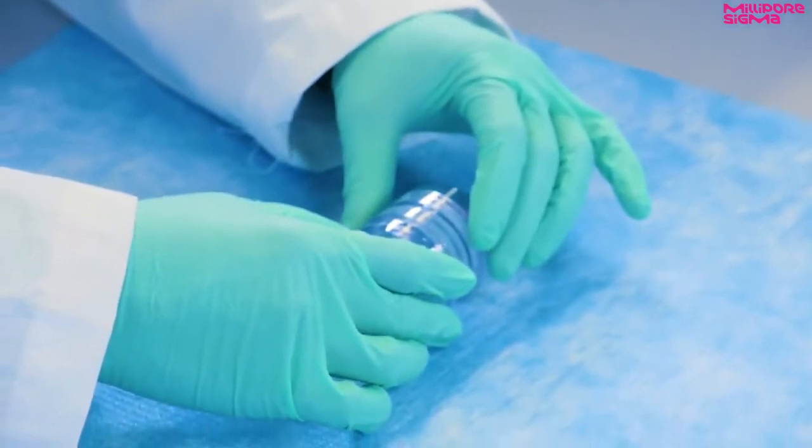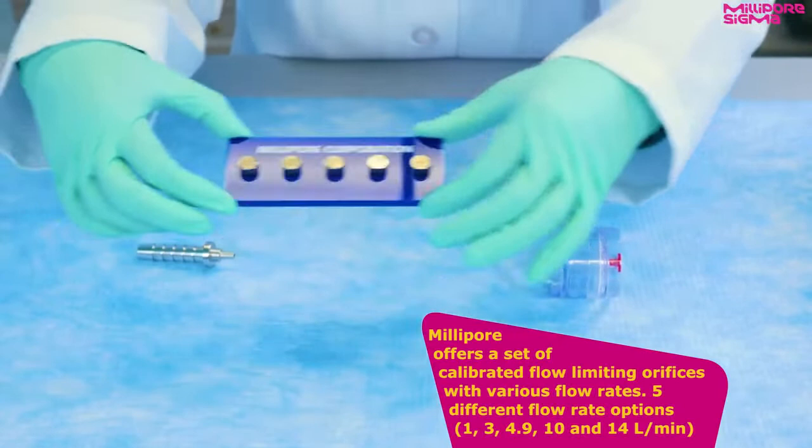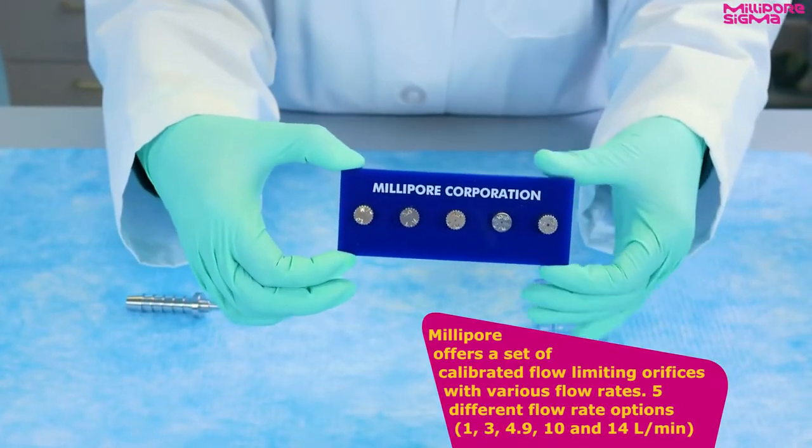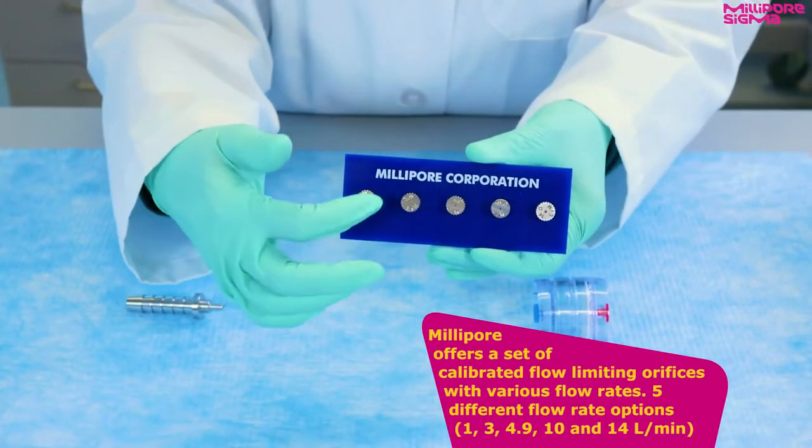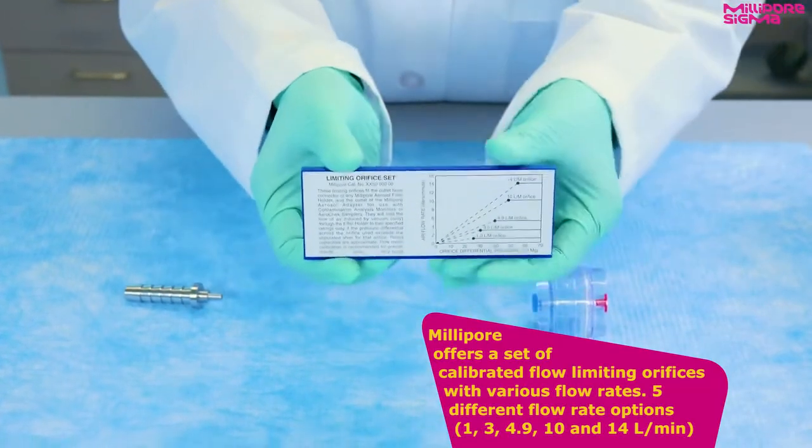As an alternative we offer a set of calibrated flow limiting orifices with various flow rates. They come with five different flow rate options: one, three, four point nine, ten, and fourteen liters per minute.